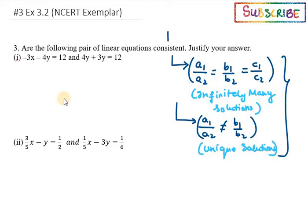Let's start with the first one. The first one is -3x - 4y = 12, and the other equation is 4y + 3x = 12. You can see the first equation is written in the form ax + by = c, but the other is in the form 4y + 3x. You need to bring it in the form ax + by = c.